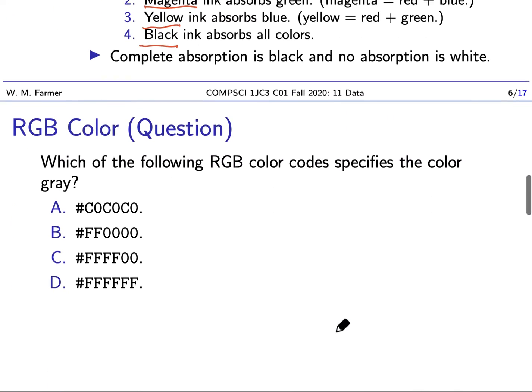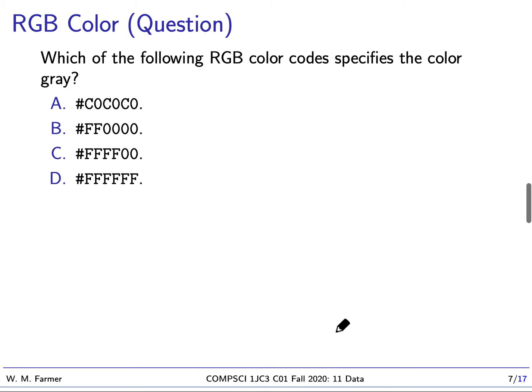I have a question now on RGB color. Which of the following RGB color codes specifies the color of gray? These are color codes where we have eight bits per color: eight bits for red, eight bits for green, eight bits for blue. I'll give you a moment. Think about this and we'll come back.